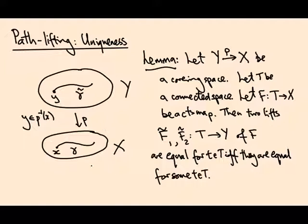So in this case, uniqueness of path-lifting, T is going to be the interval, and we're going to check that they're equal at the very beginning, and that will tell us they're equal everywhere. So you get a unique lift. Let me just remind you, the condition that F tilde is a lift is just saying that if you compose F tilde with the projection P, you get back the map F.